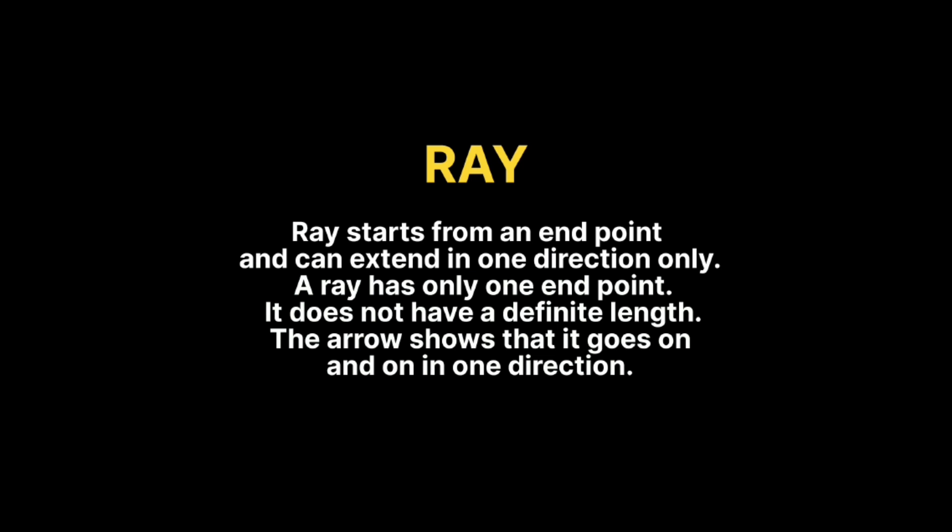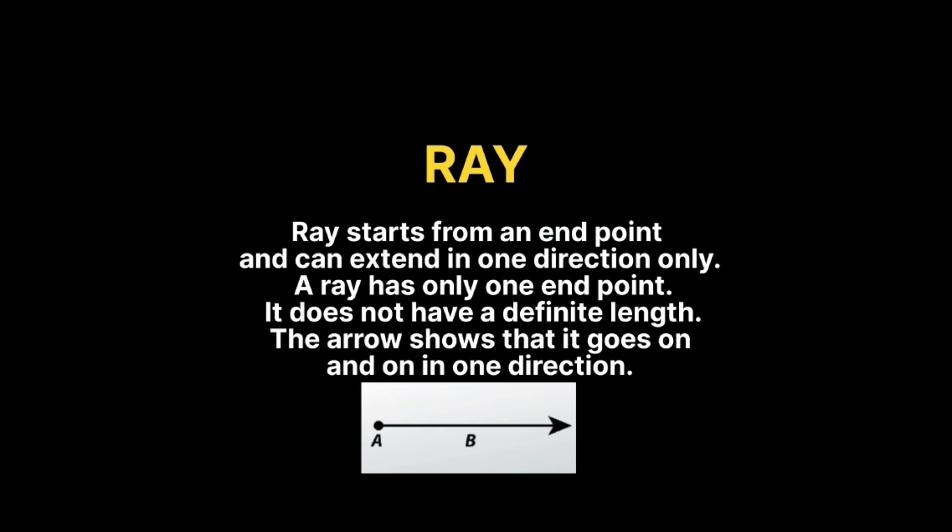Ray. Ray starts from an endpoint and can extend in one direction only. A ray has only one endpoint. It does not have a definite length. The arrow shows that it goes on and on in one direction.